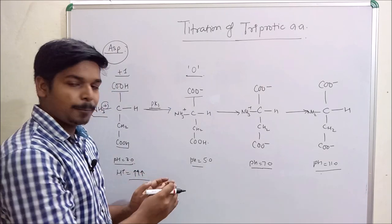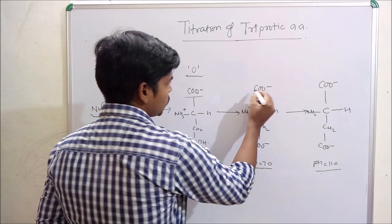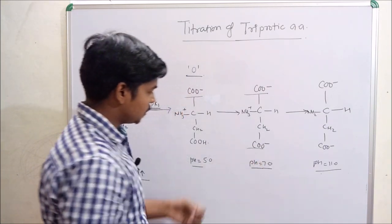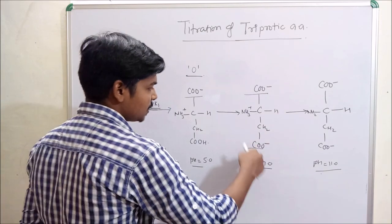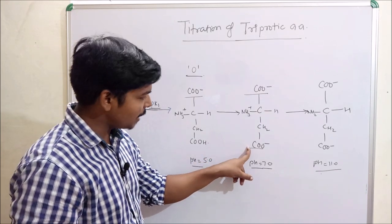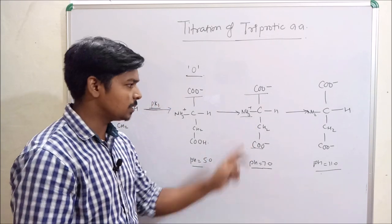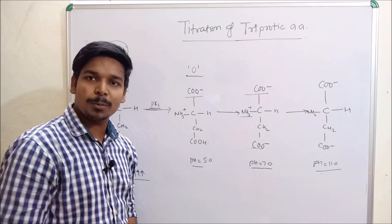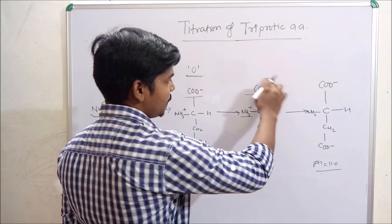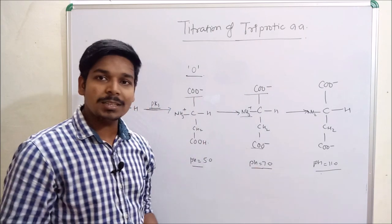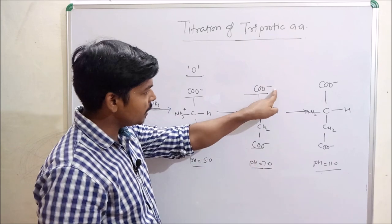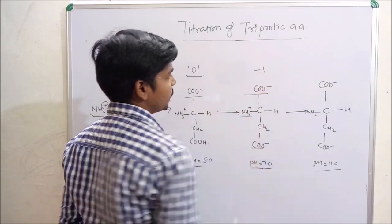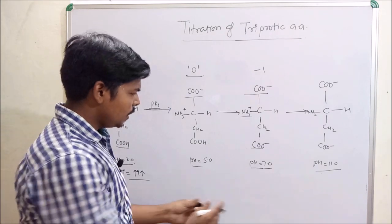When we increase the pH from 5 to pH 7, there is no more proton available to the primary carboxylic group. The second carboxylic group — the R group carboxylic acid — is an acid with tendency to donate the proton, while the amino group is a base with less tendency to donate. So the R group carboxylic acid will donate the proton at pH 7. At this point, the net charge is: one negative, one negative, and one positive — so one negative and one positive cancel out, giving a total net charge of minus one.